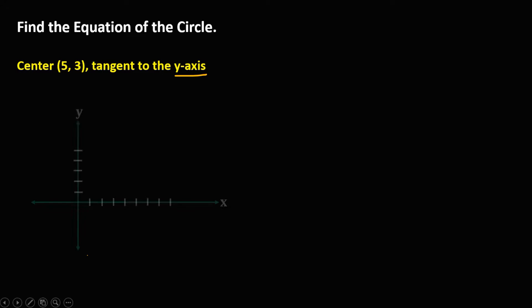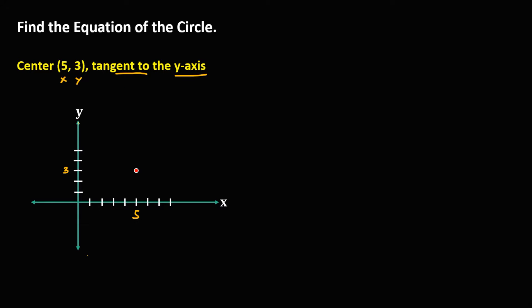If we put this on a plane, we have the center x and y. So x is positive 5 and y is positive 3. This is the coordinate of the center. Since the circle is tangent to the y-axis, this is now the circle tangent to the y-axis.